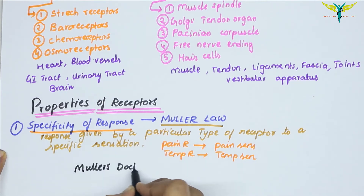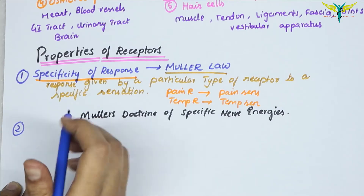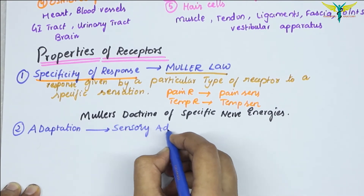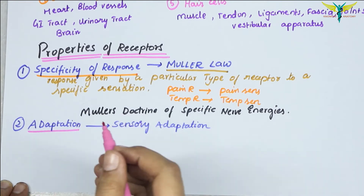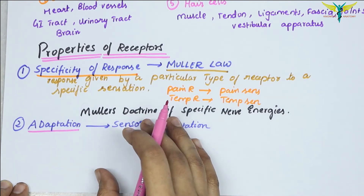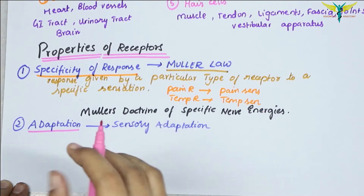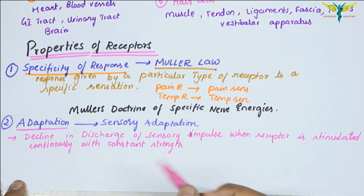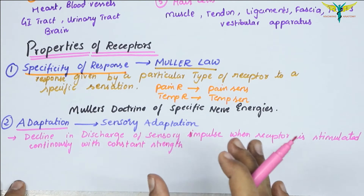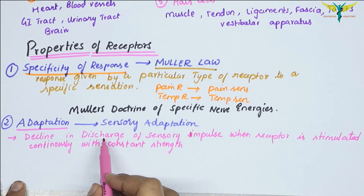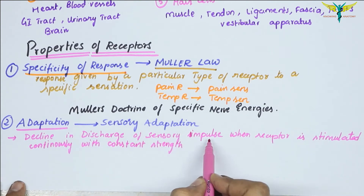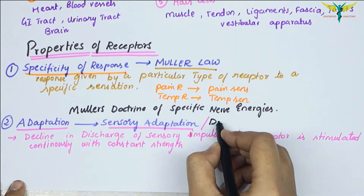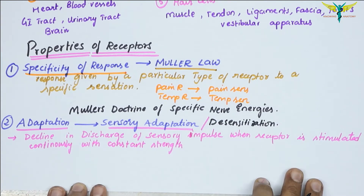The second property of receptors is adaptation, that is sensory adaptation. Adaptation is the decline in the discharge of sensory impulses when a receptor is stimulated continuously with a constant strength. When the receptor is stimulated continuously with a constant strength, it leads to a decline in the discharge of sensory impulses, and this is called sensory adaptation. It is also called desensitization.